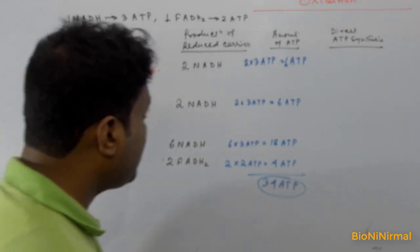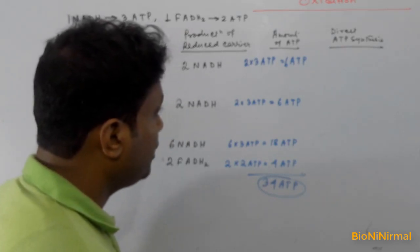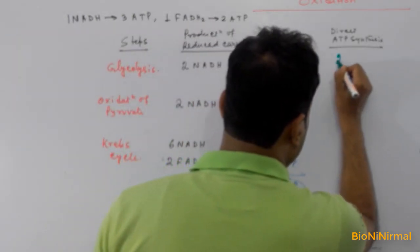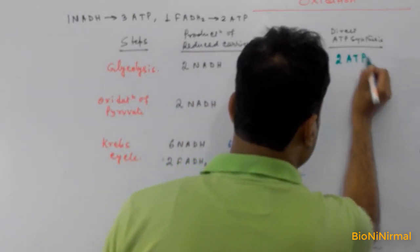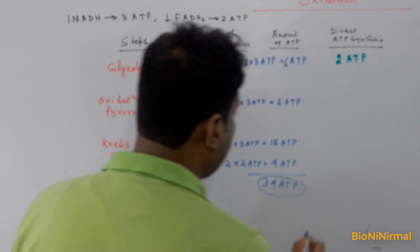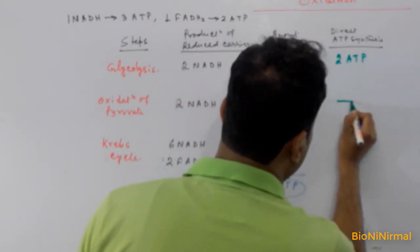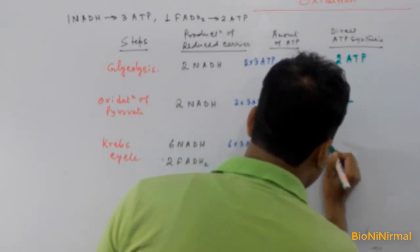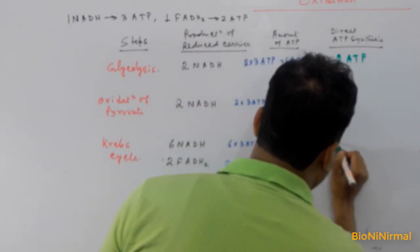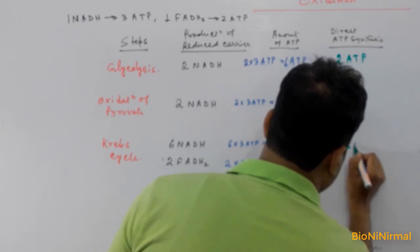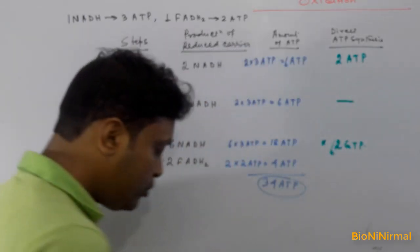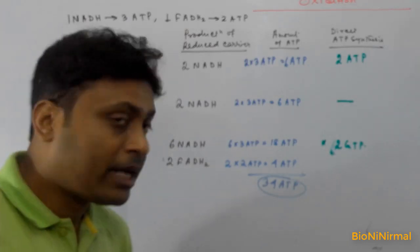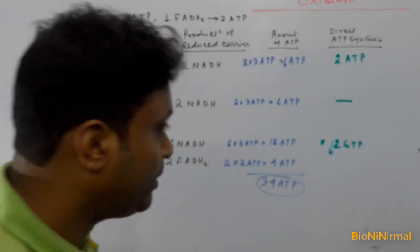For direct ATP synthesis: by the process of glycolysis, two molecules of ATP are produced directly. By the oxidation of pyruvate, no ATP molecule is produced directly. By the process of the Krebs cycle, two molecules of GTP are produced. These two GTP molecules can be regarded as two molecules of ATP.